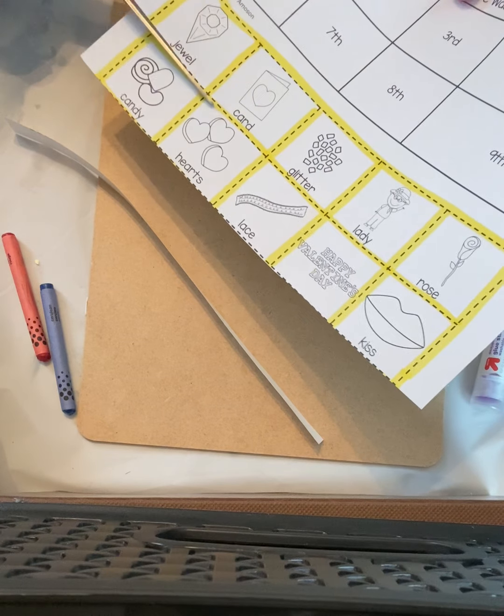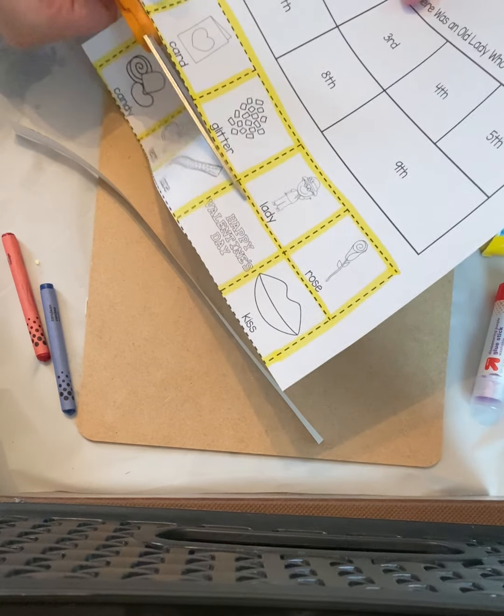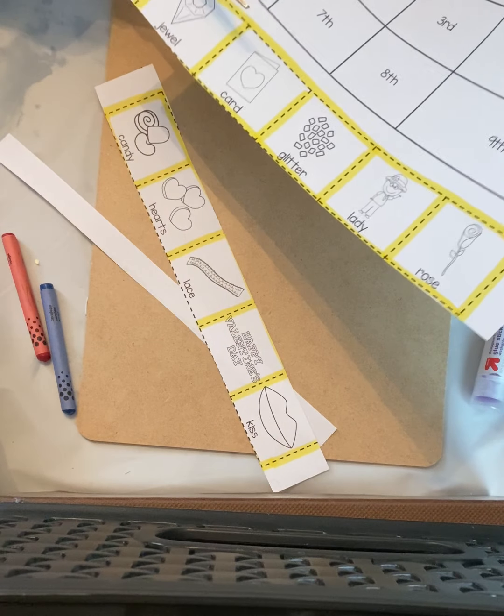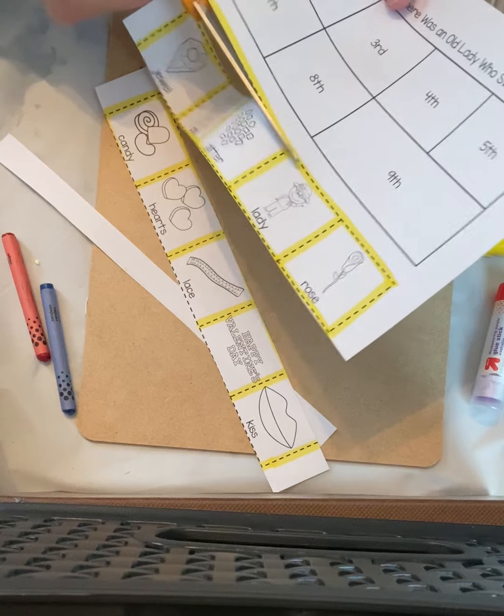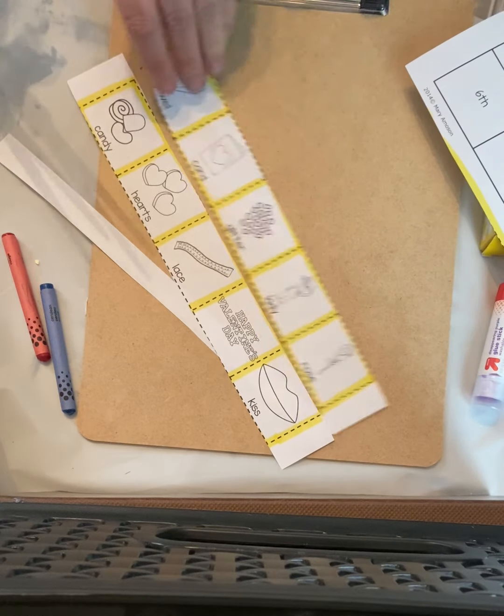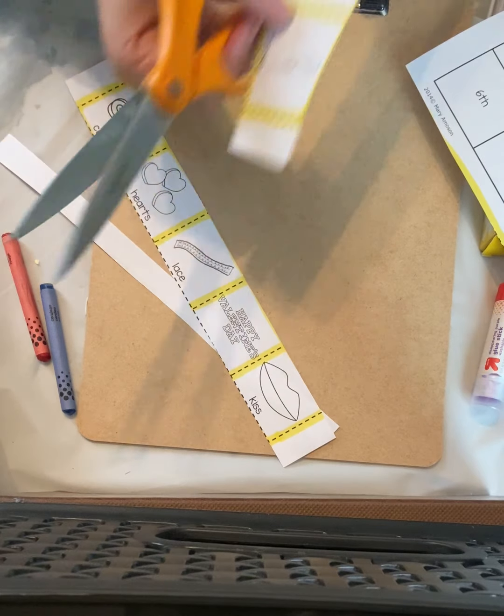So you can cut all of the straight lines. So cut, cut, cut, cut, cut. We have one more. Cut, cut, cut. And you can put that to the side and you can cut out all of your pieces.